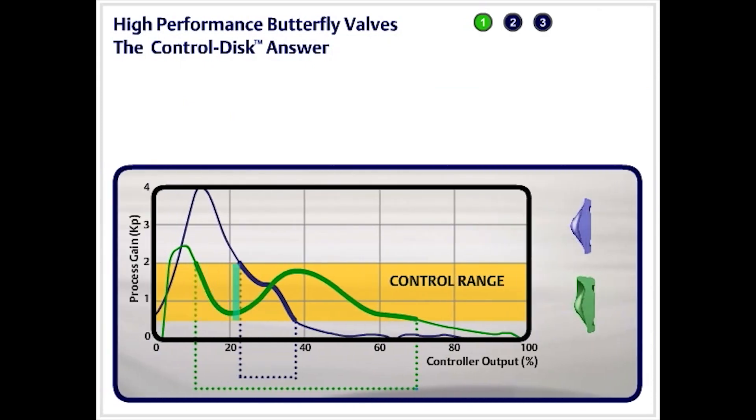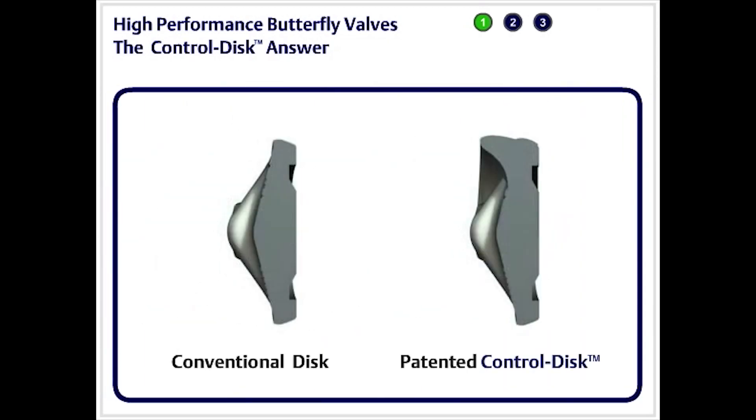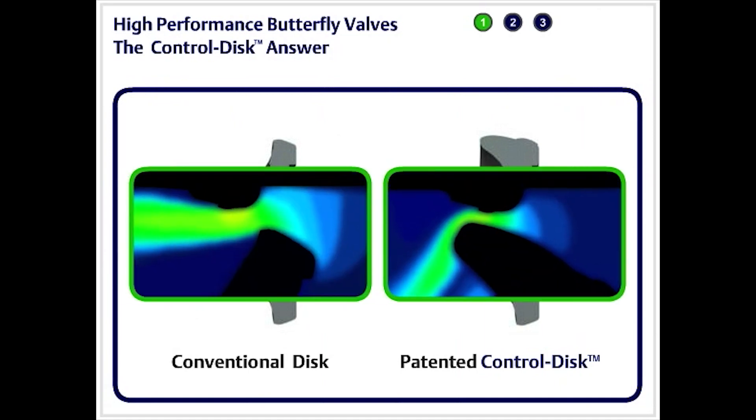The new disk eliminates cycling at low flow, which greatly improves control and minimizes process variability. While at high flow conditions, its control gain provides good performance.